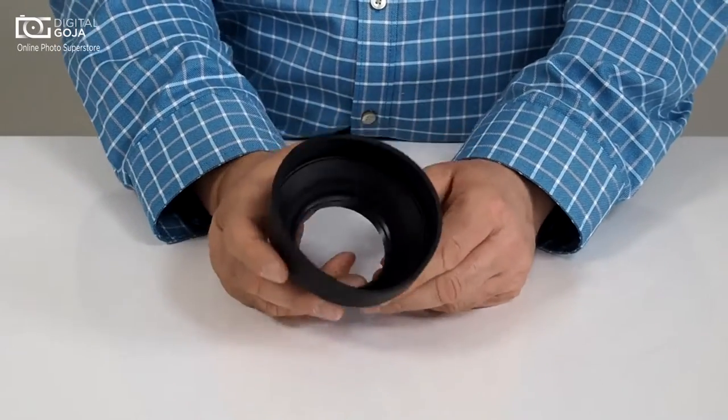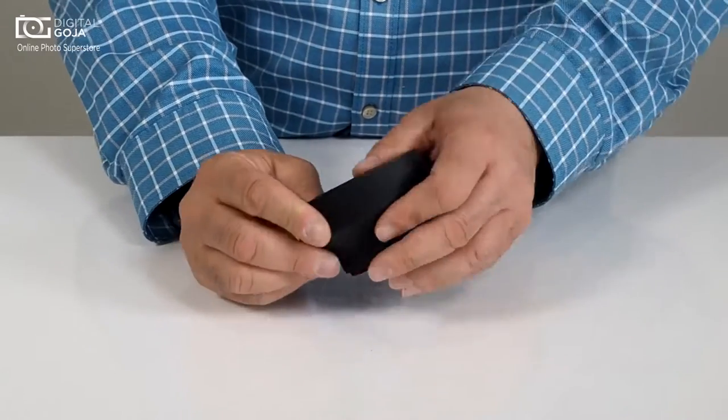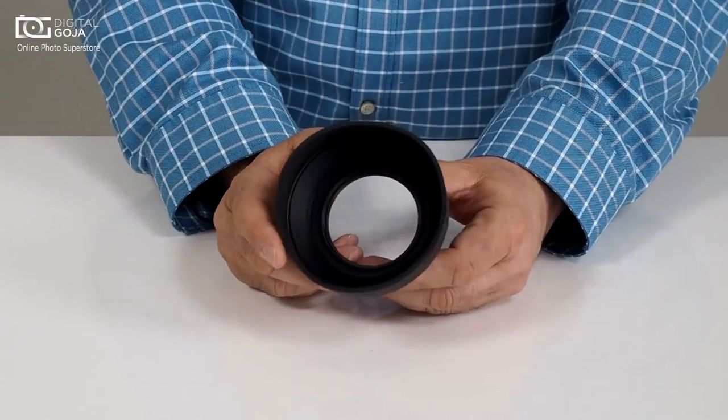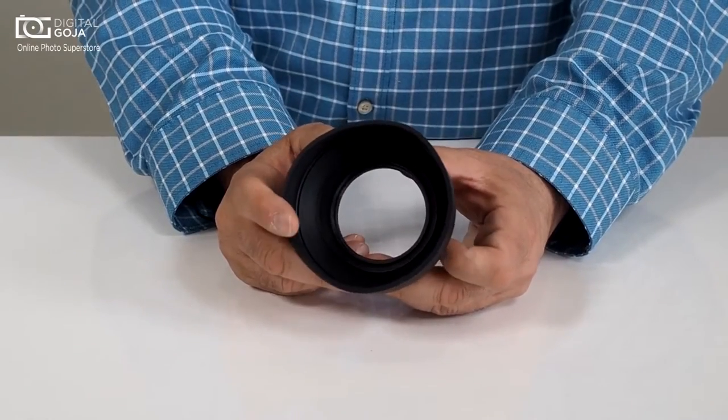Now sometimes the way we store these, you might get a bit of a crease on the side. Remember, this is just to block extraneous light. It doesn't have to be a perfect circle because even the ones the manufacturer sells, especially the tulip design, are not perfect circles.